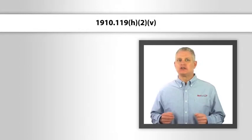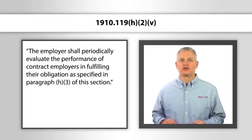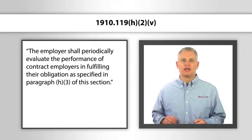Now let's go over some additional employer responsibilities. Under 1910.119 h2 roman numeral v, the employer shall periodically evaluate the performance of contract employers in fulfilling their obligations as specified in paragraph h3 of this section. So I recommend that your purchasing department be heavily involved in the selection of contractors and doing the initial selection process. So you have a questionnaire and also there be a periodic evaluation of contractor safety performance. On large jobs, quite a few of my clients will do an evaluation periodically through the job as it's going on and then at the end, whether or not they recommend this contractor for future work or if they're disqualified from doing work with that company again.